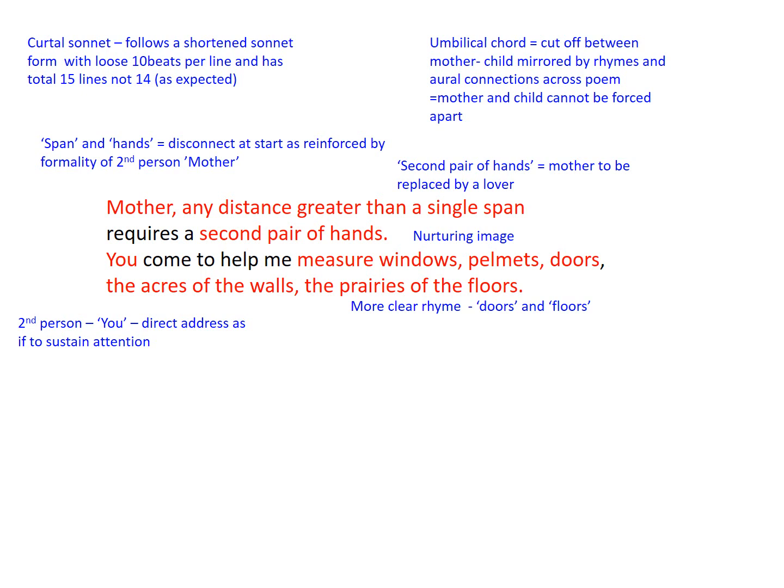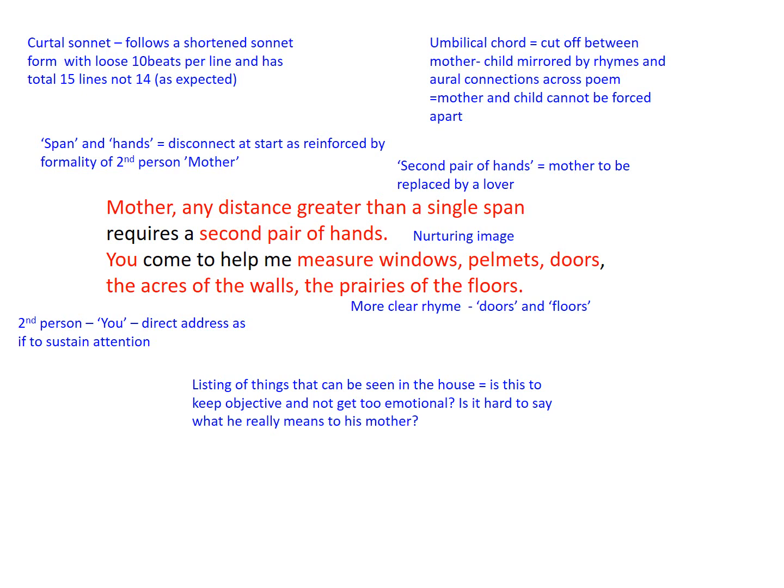There's a list from lines three to four of what can be seen in the house — windows, pelmets, doors, walls, the priories of the floors. Is this to keep it objective and avoid getting too emotional? Maybe it's too hard to say what the child feels he means to his mother. The semantic field of measurement — 'single span,' 'measure' — suggests the mother holds on whilst the son unreels like a measuring tape, considering how their relationship sizes up.